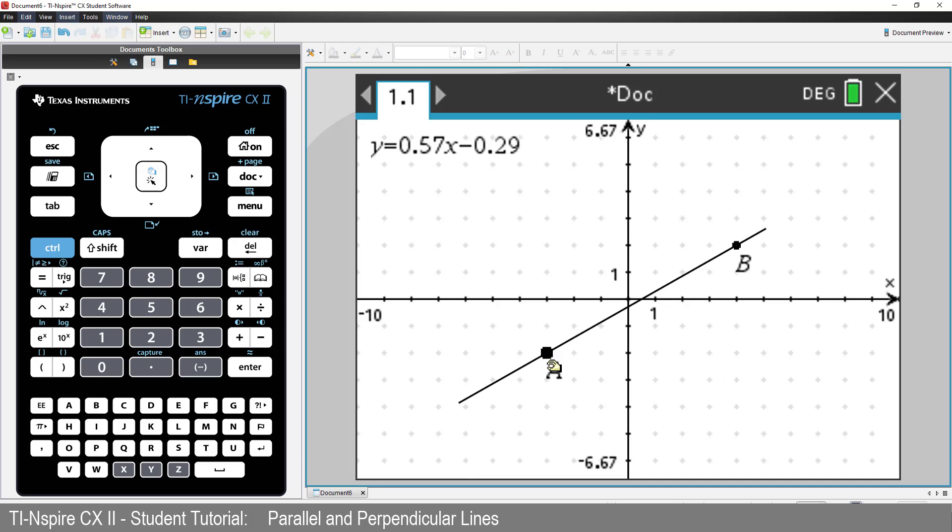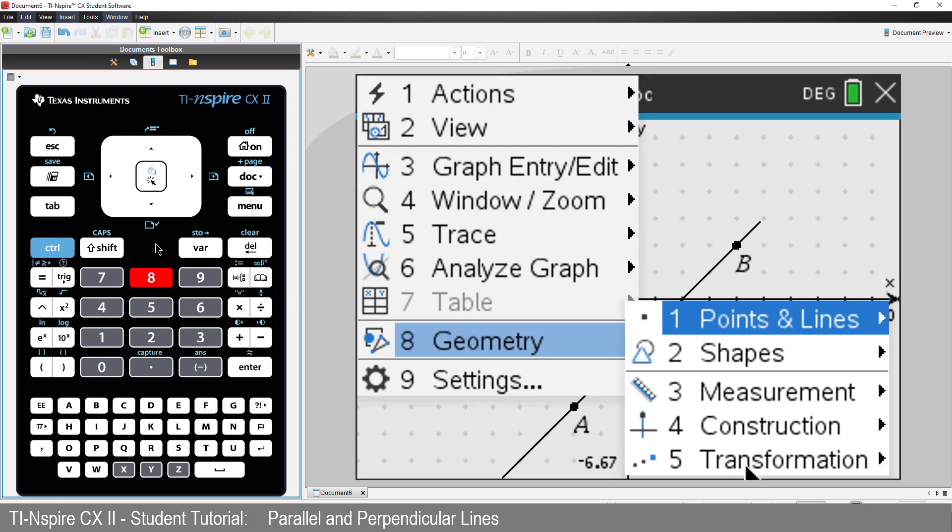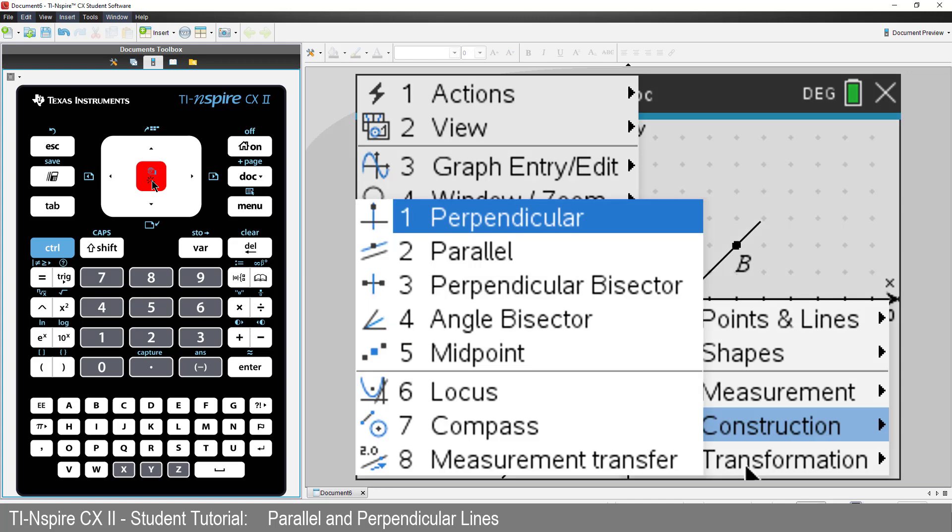Suppose I want to create a line parallel to this one. Press Menu, Geometry, then Construct. And select Parallel.